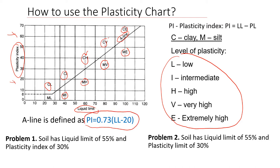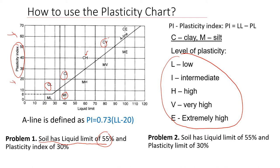Now let's look at two examples — two different problems — and see how we can use these plasticity charts to classify the soil. We'll start with Example 1, where we have a soil with a liquid limit of 55 percent and a plasticity index of 30 percent.